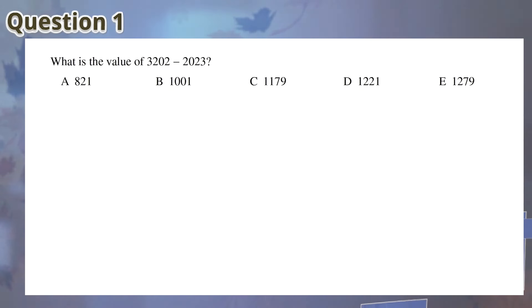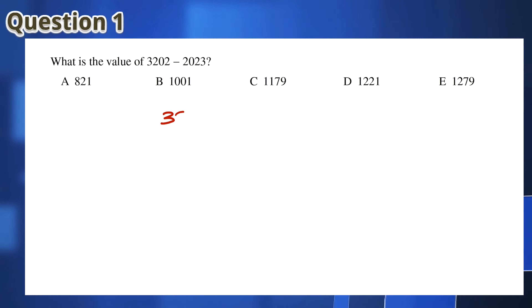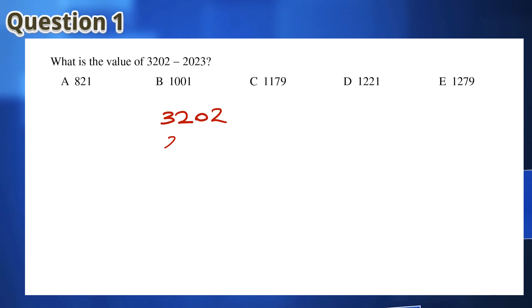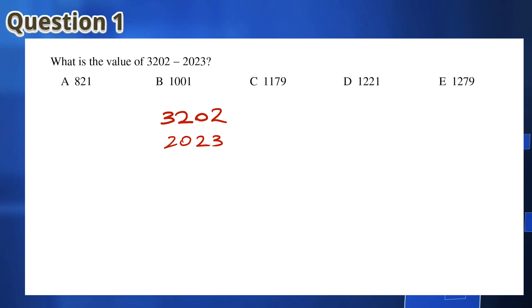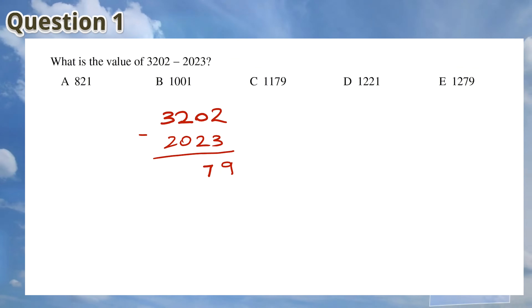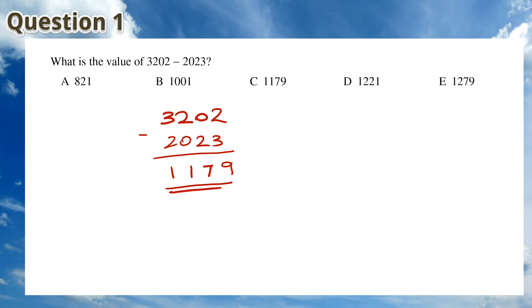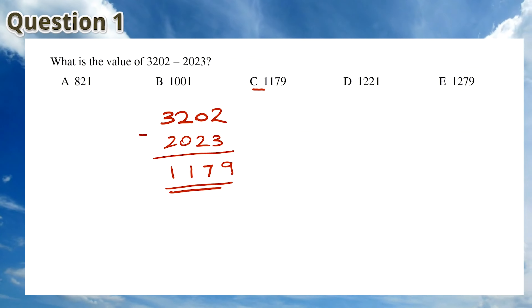Question 1 is a simple subtraction. 3,202 minus 2,023 is equal to 1,179. This means that the answer is C.